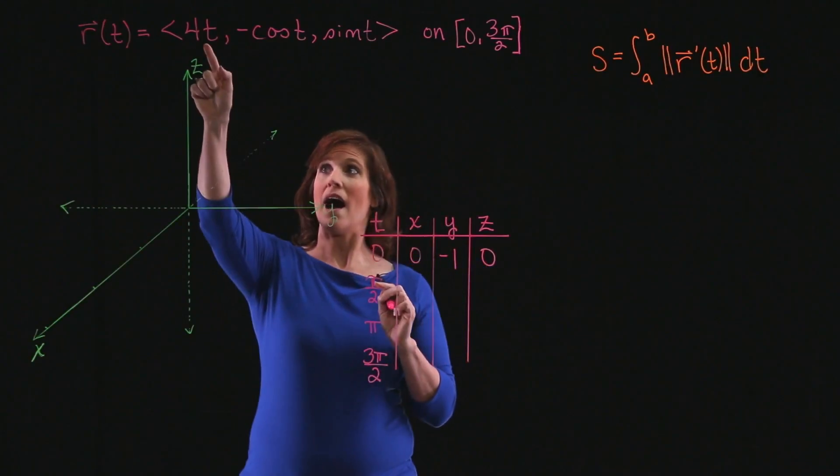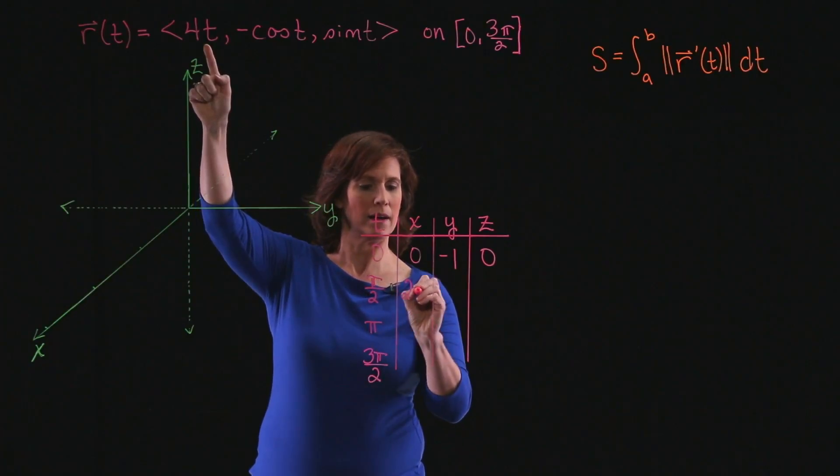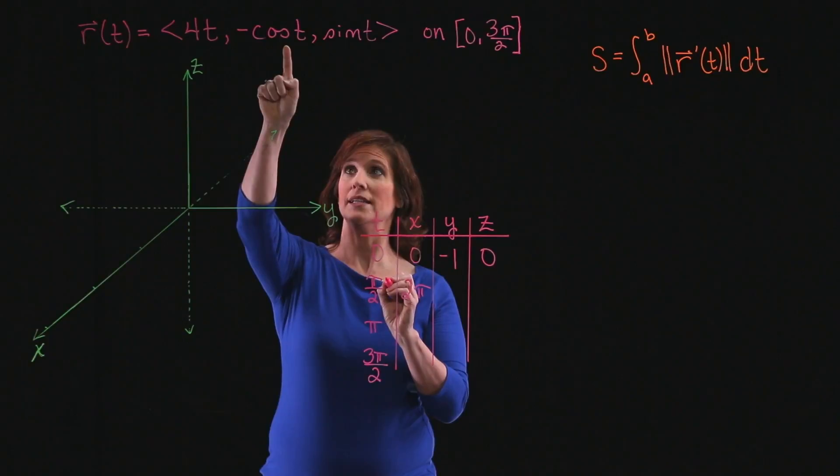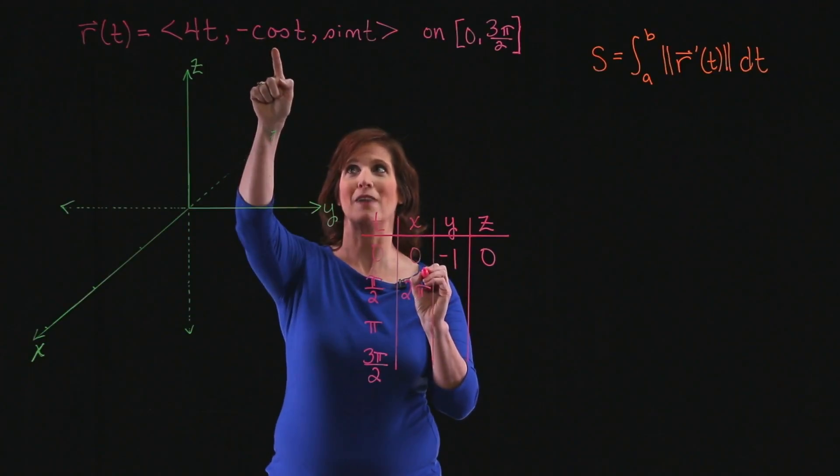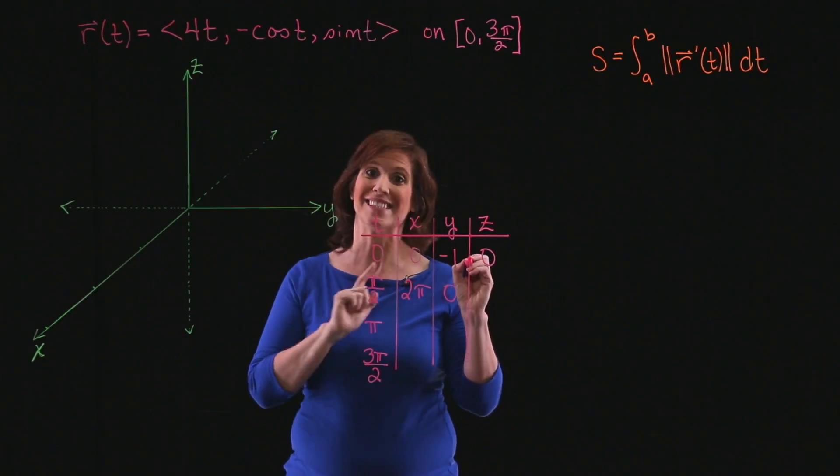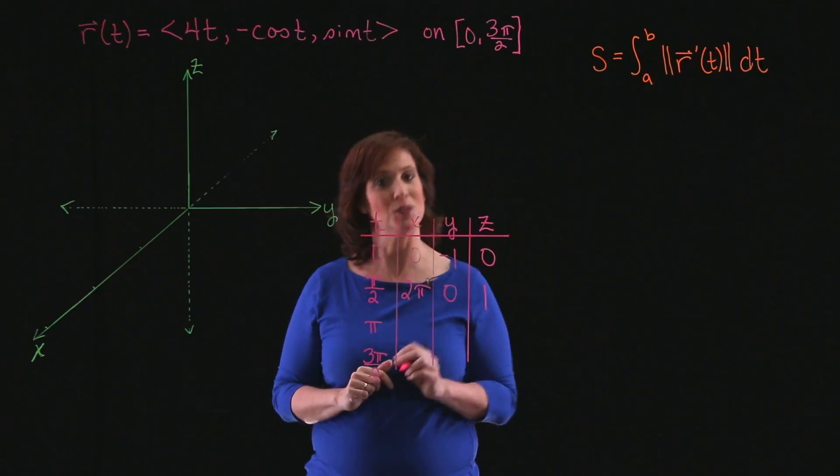At π/2, I will have 2π. The cosine of π/2 is 0, and negative 0 is just 0. And the sine of π/2 is 1.